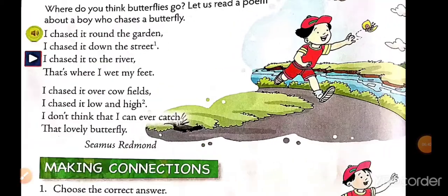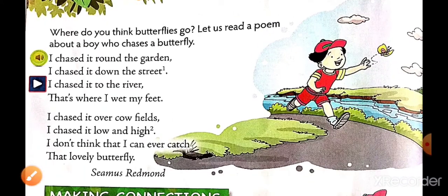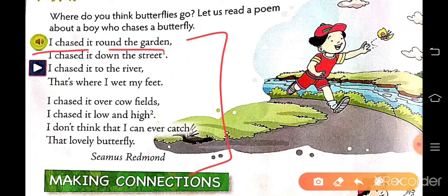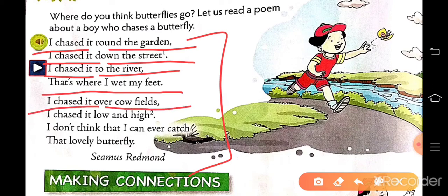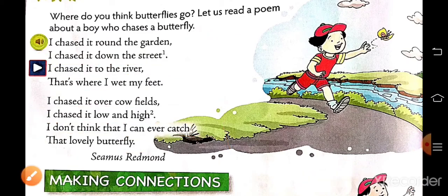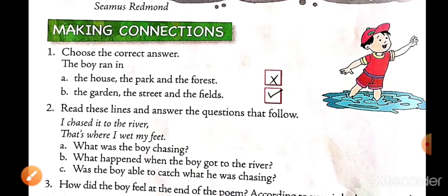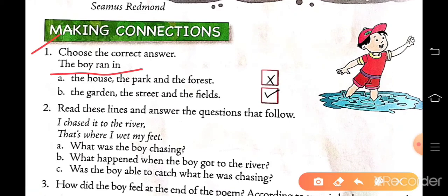Now the next lesson: poem. This is a poem, Flutter By. You have to learn the eight lines of this poem. In the exam you will have a poem to write. So first learn it: I chase it around the garden, I chase it down the street, I chase it to the river, that's where I wet my feet. I chase it over cow fields, I chase it low and high, I don't think that I can ever catch that lovely butterfly. These are the eight lines. Learn this poem properly. Now the exercise of this poem: choose the correct answer. The boy ran in the house, the park and the forest; the garden, the street, and the fields. The correct answer is the garden, the street, and the fields. So tick it.